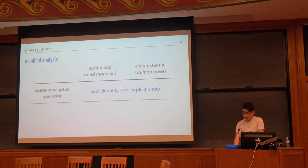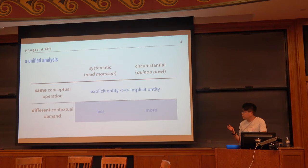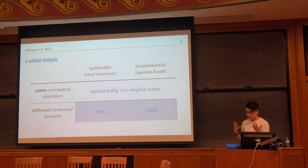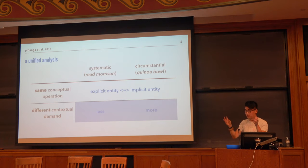The two types of metonymy definitely do differ, though, and where they differ is in how much context they need. Systematic metonymy is more conventionalized and thus requires less context, whereas circumstantial metonymy requires more context. So the two are more like ends of a single spectrum of contextual dependence on this same conceptual operation of linking two entities.